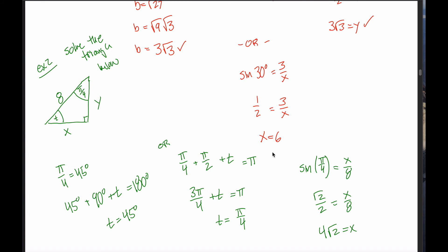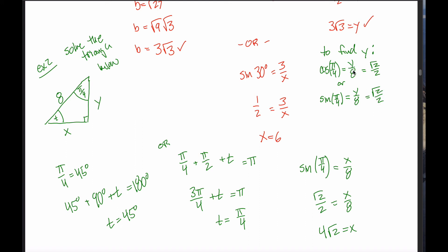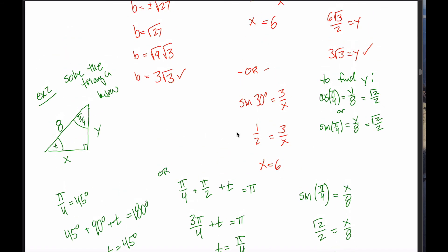Once we know x, we can figure out y. We could say the cosine of pi over 4 equals this adjacent divided by this hypotenuse and solve that equation. Or we could use angle t, which equals pi over 4, and say the sine of pi over 4 relative to that angle equals y over 8. The sine of pi over 4 is root 2 over 2, giving y equal to 4 root 2 — the same as x. Right, because both angles are 45 degrees, this is an isosceles triangle, and both leg lengths must be equal.